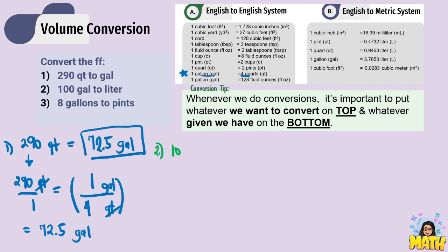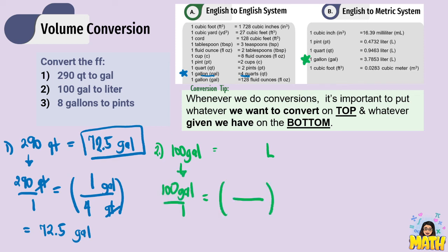Number 2: convert 100 gallons to liters. Since liters is a metric unit, we use the English to metric conversion. Using 1 gallon equals 3.7853 liters: 100 times 3.7853 gives 378.53 liters.